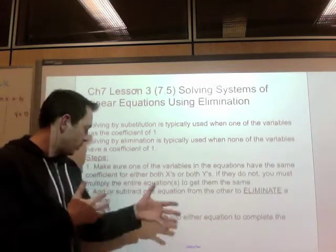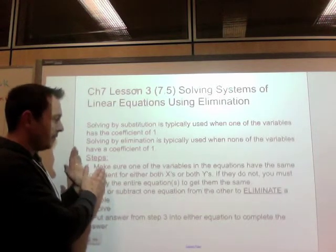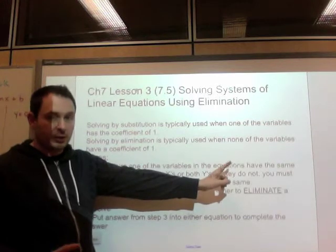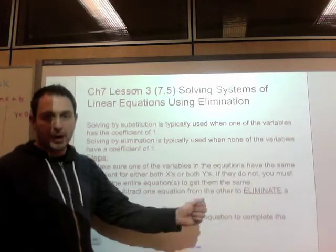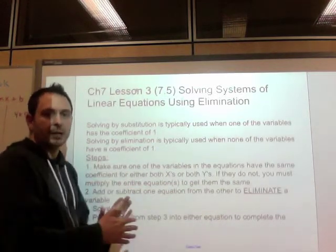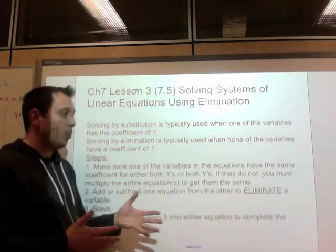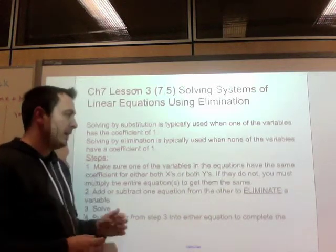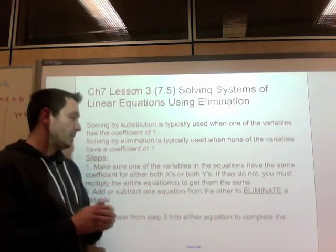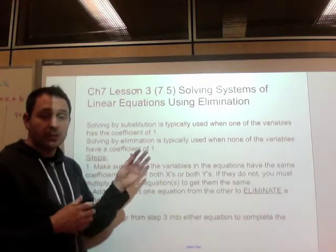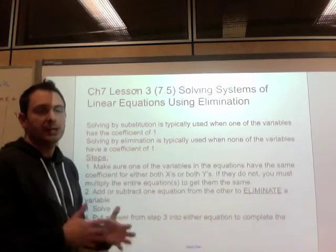So our steps. Step 1 is the only real one that is really different from the others. Make sure one of the variables in the equation, so either the x or the y, have the same coefficient for either both of the x's or both of the y's. So to eliminate, you need a 2x and a 2x, or a 5x and a 5x, or a 7x and a negative 7x. That coefficient has to be the same. Or the y's could be the same. You'd have 3y's and 3y's. If they aren't the same, then you must multiply the entire equation or equations to get them the same. So if one was 2x and one was 3x, 2 and 3 have a common multiple of 6, you could multiply the whole equations to get the same coefficients.